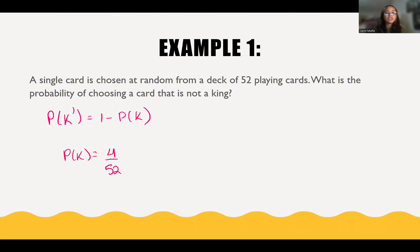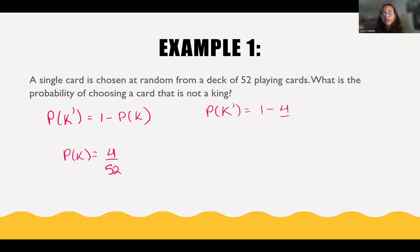So now I can just substitute that into our equation, and we would have that the probability of the complement is equal to 1 minus 4 over 52. Since this is a fraction and 1 is a whole number, to make 1 a fraction we would have 52 over 52 minus 4 over 52.